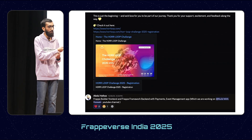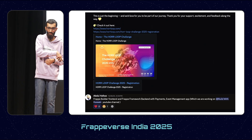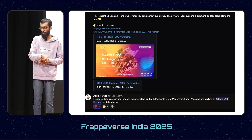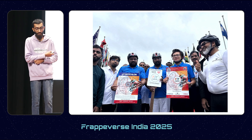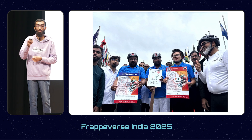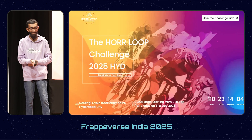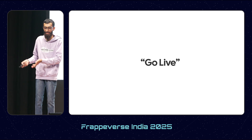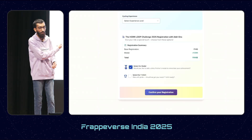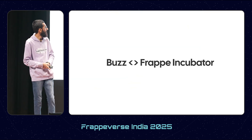The interesting part: Abdul Hafiz built a platform on top of the event management app for running a cycling event in Hyderabad and made it live at episode 12. The Horlup Challenge happening in Hyderabad — the health minister of Hyderabad is involved — and they are running it on the event management app, Buzz. The add-ons feature, you can see how they used it. He built this in Frapa Builder.